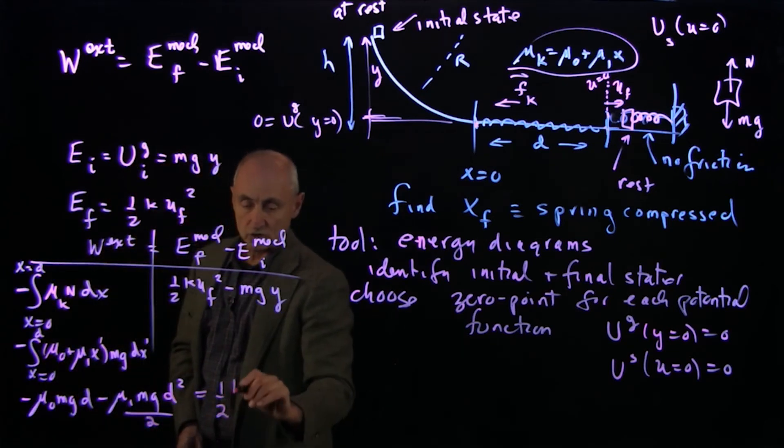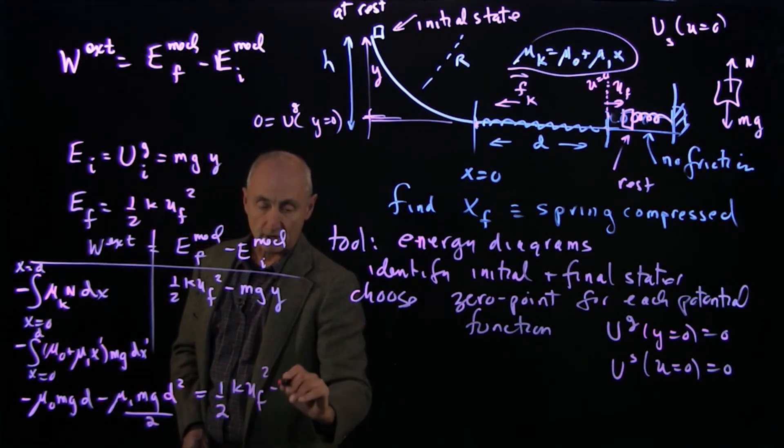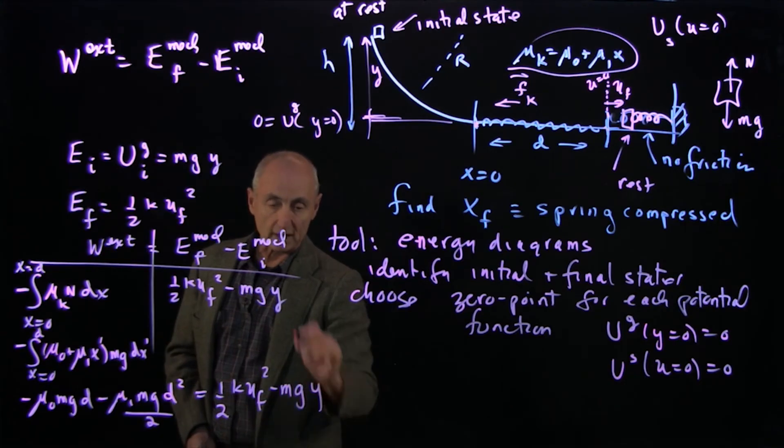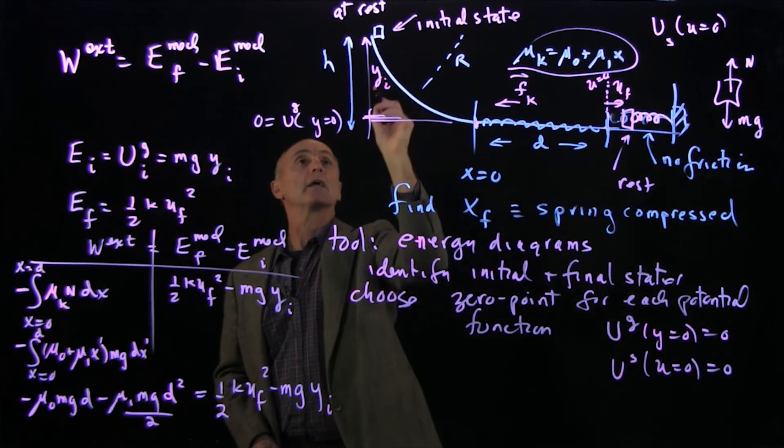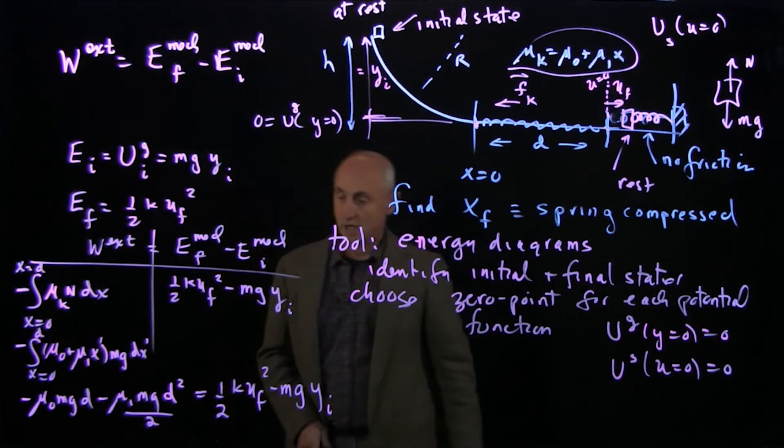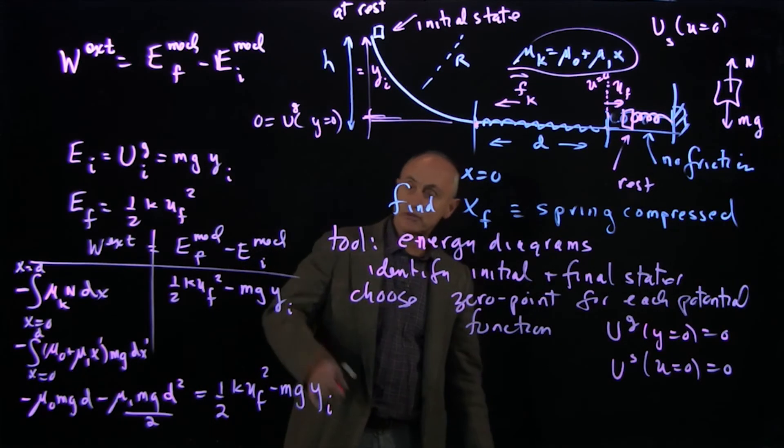And that's equal to ku final squared minus mg y. Let's write that as y initial. And we're starting it at y initial equals h. And so even though this is complicated,